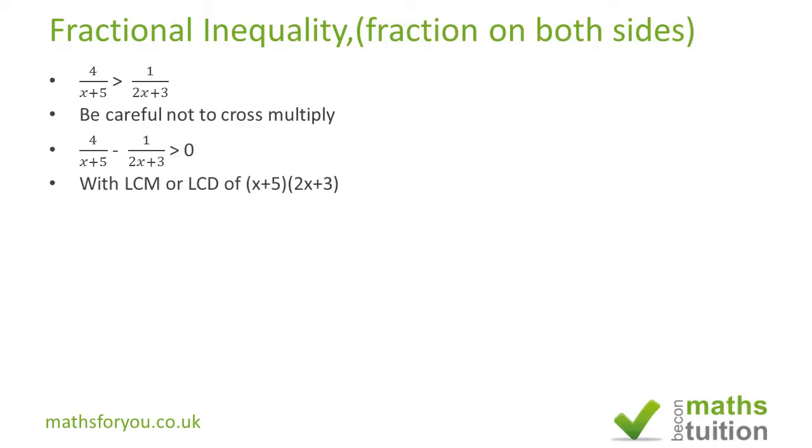So now we end up with 4 times (2x+3) minus 1 times (x+5) and that's what we got here greater than 0. Expanding a bracket is going to give us 8x plus 12 minus x minus 5.